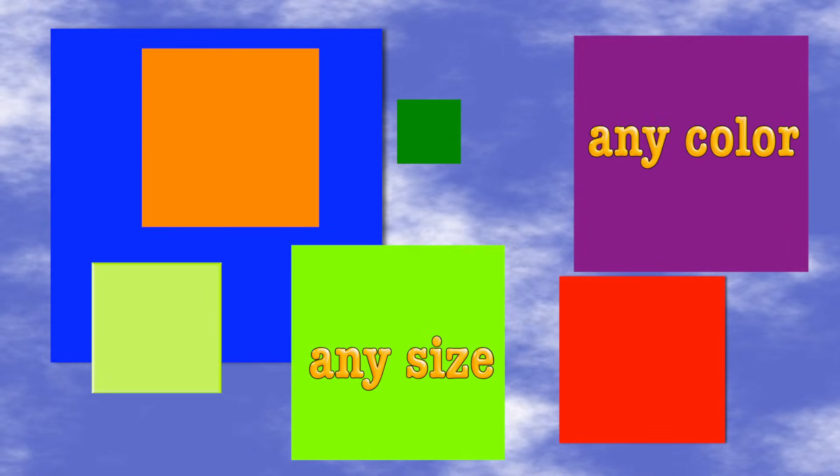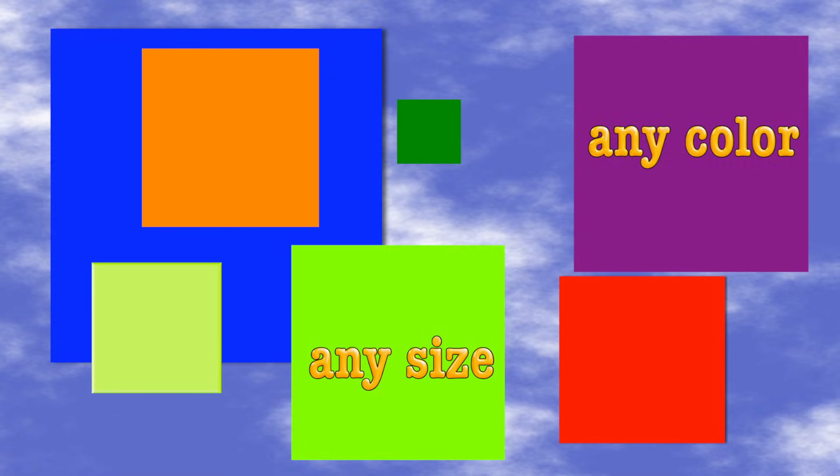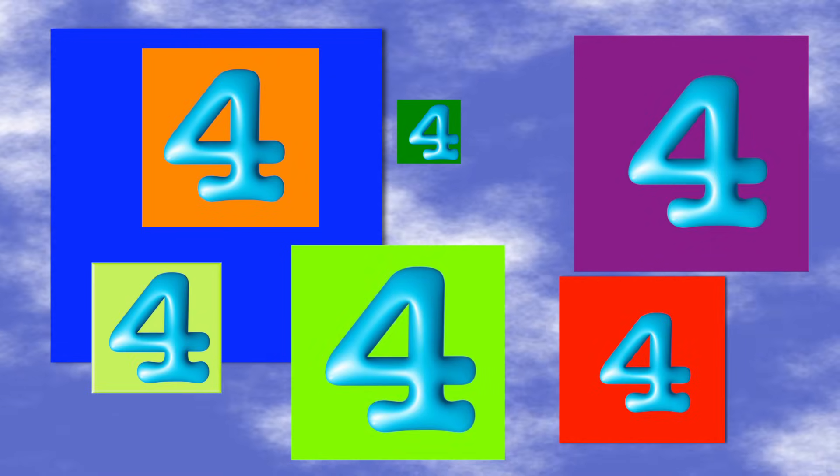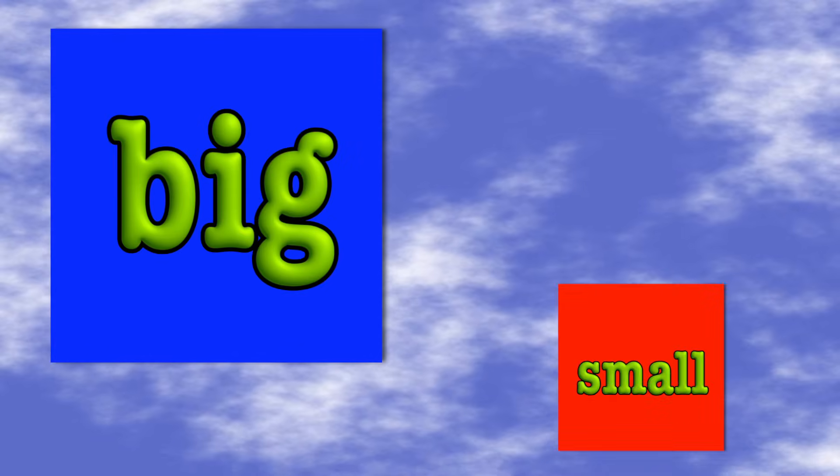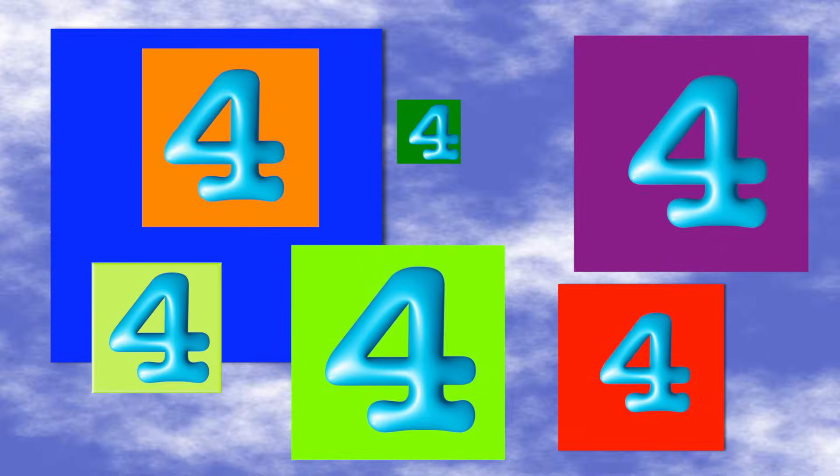Some are big, some are small, blue and red, that's not all. Any color, any size, every square has four sides.